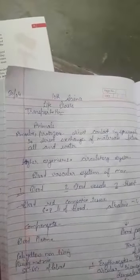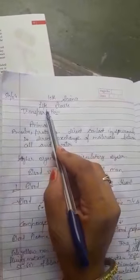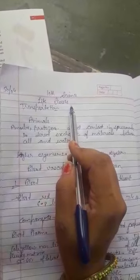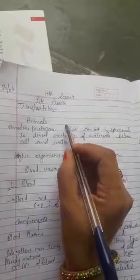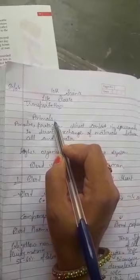Hello students, this is our science class. We are studying about life processes and we have done transportation in plants, which happens with the help of xylem and phloem. Now we will do transportation in animals like man.